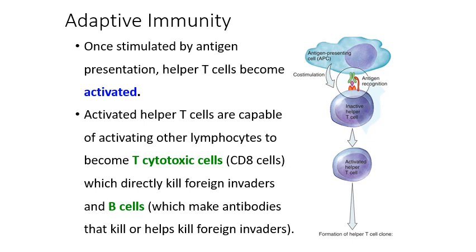In this picture, we've got our antigen presenting cell — a B cell, dendritic cell, or macrophage. The MHC class 2 protein is holding onto the antigen and presenting it to a T cell, whose T cell receptor — also called an antigen binding site — receives the antigen presented by the APC. Once that presentation happens, there's recognition of that antigen by the inactive helper T cell, and now that he's been warned of what the enemy looks like, he can begin to mount an immune response specific to that particular antigen.